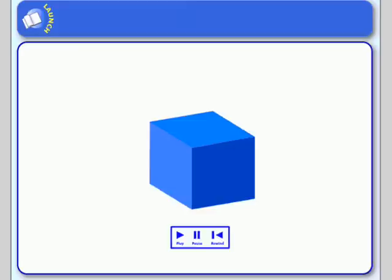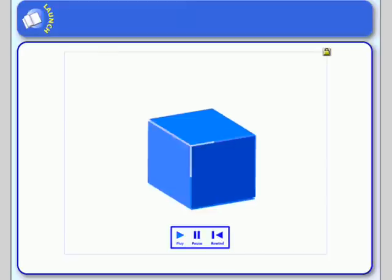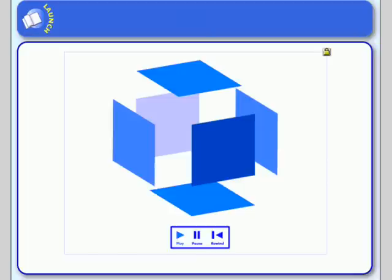So if you were going to find the surface area of this cube, you would find the area of each face and add it all together. You would add up the six sides.